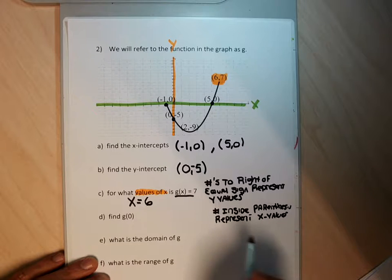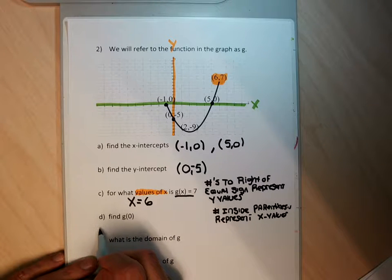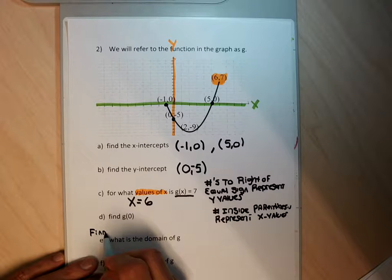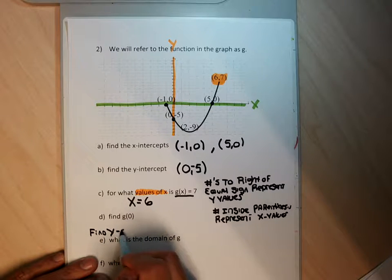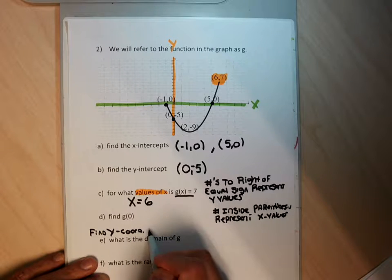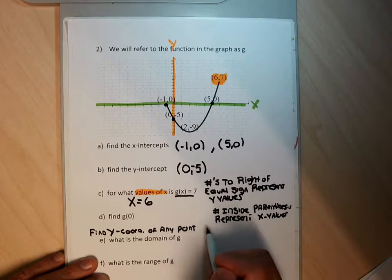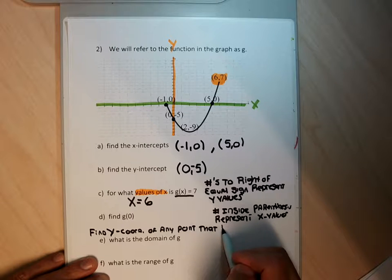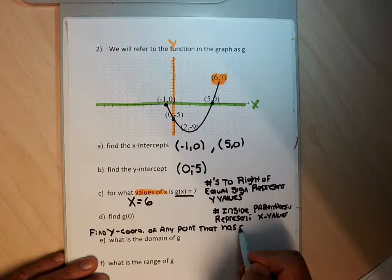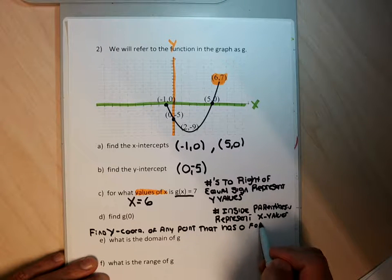Part D is asking me to find the y-coordinates of any point on the graph that has zero for its x-coordinate.